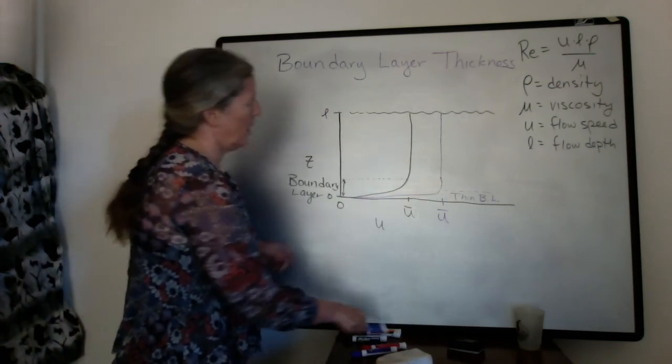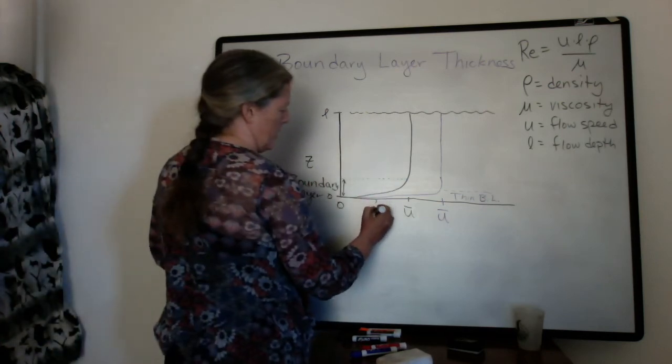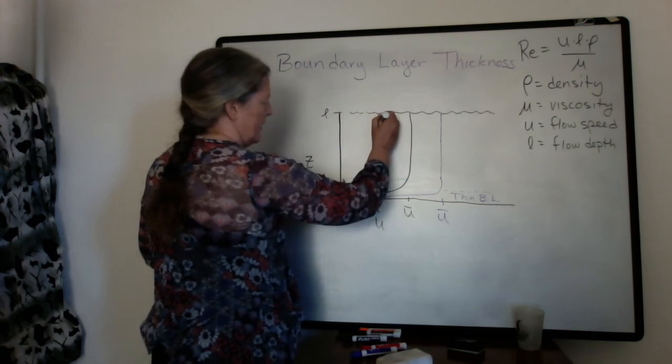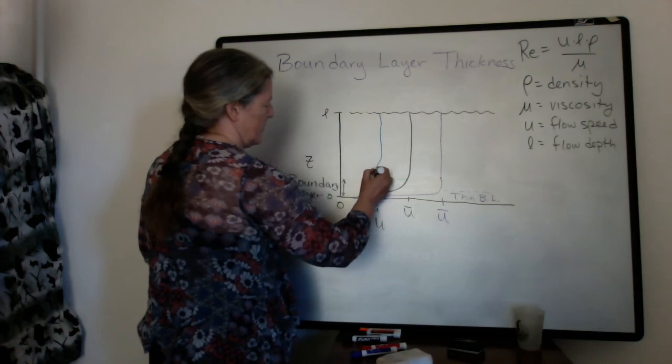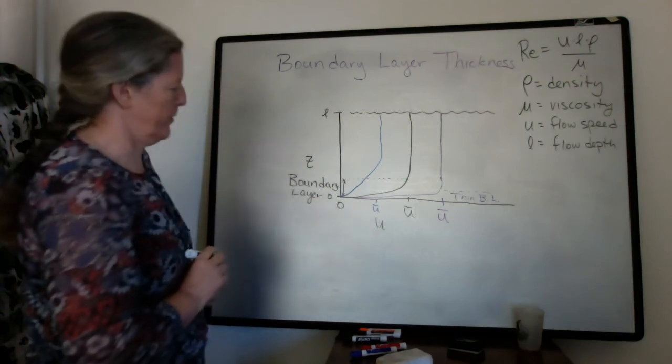Similarly, if you increase the flow speed, your boundary layer often gets thicker because there's less turbulence to mix in with the flow.